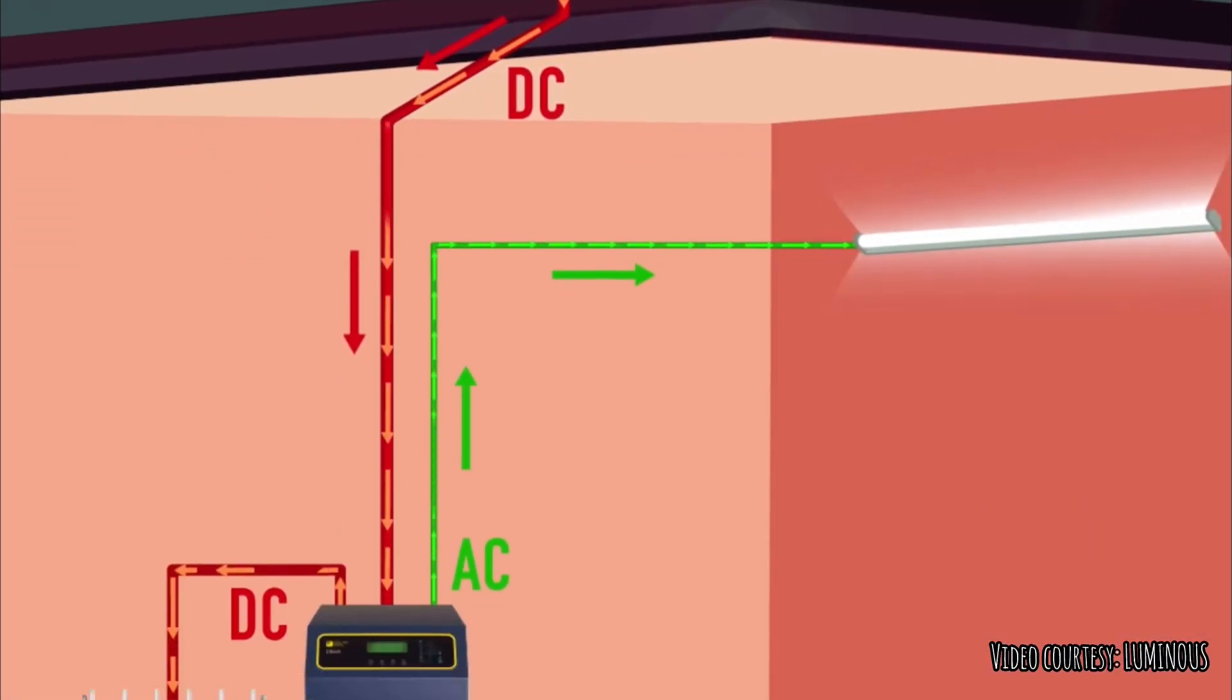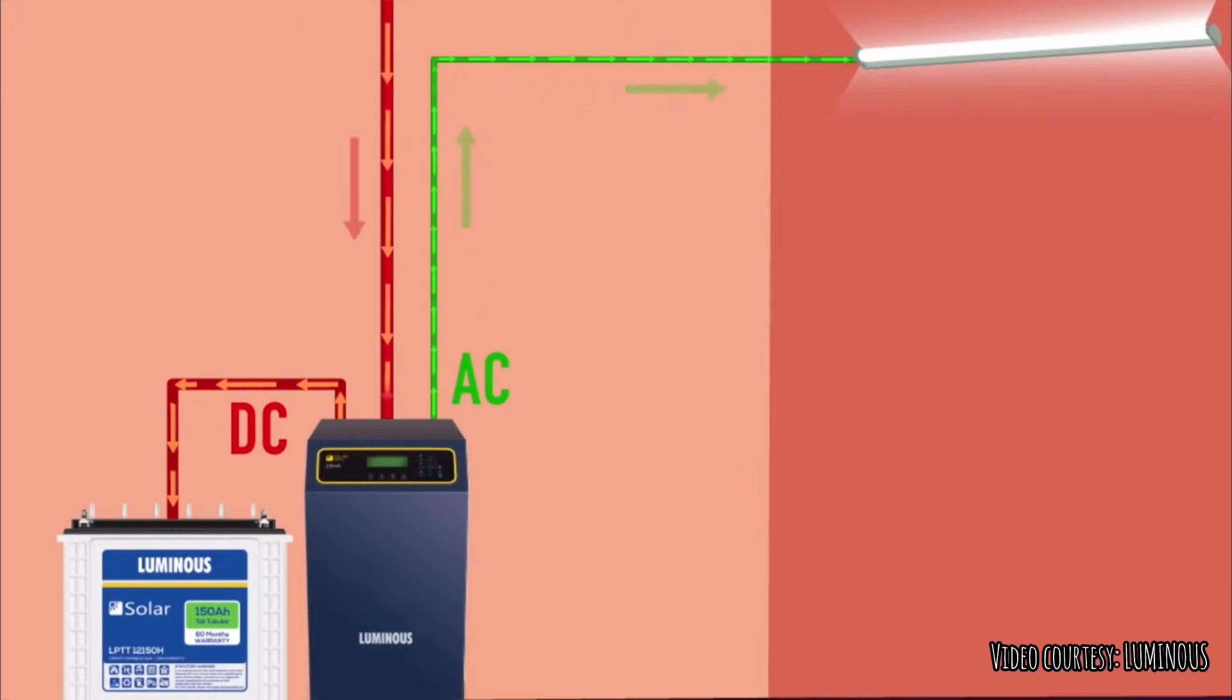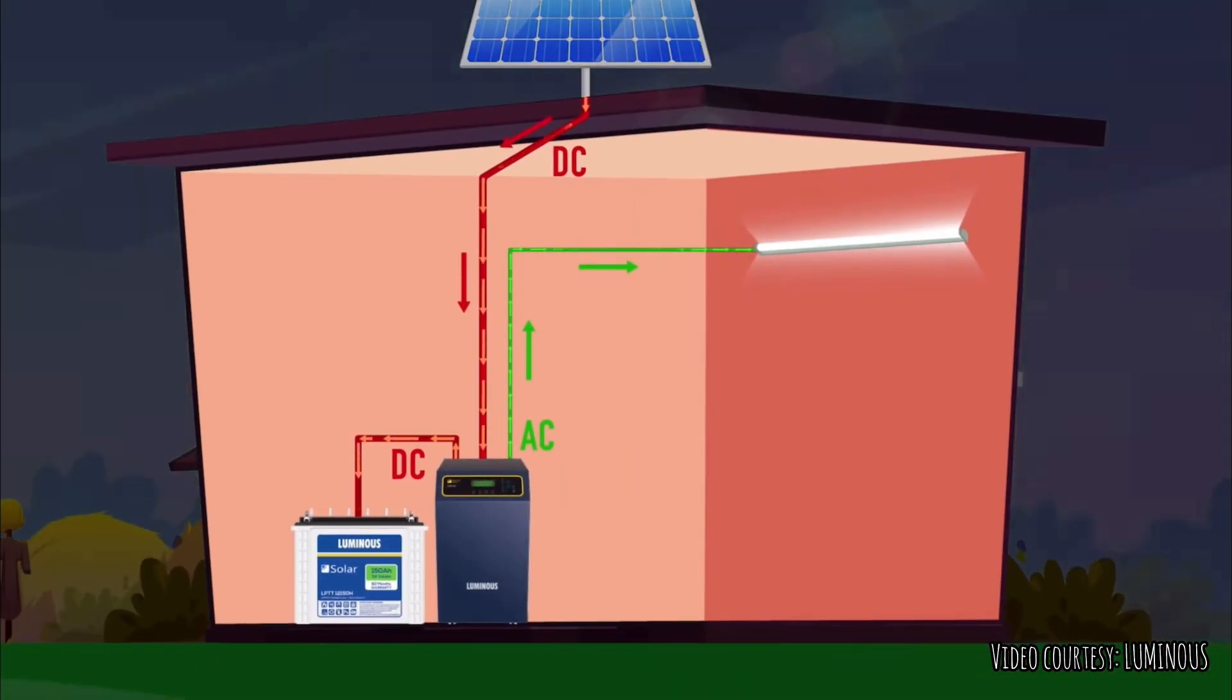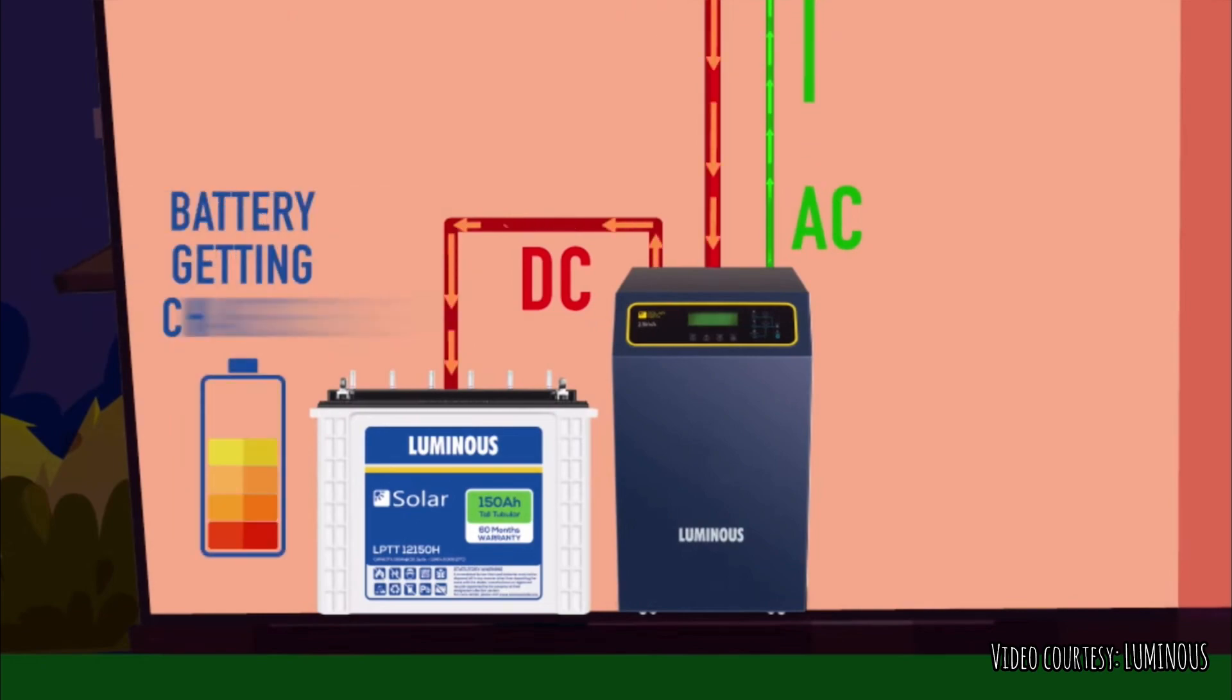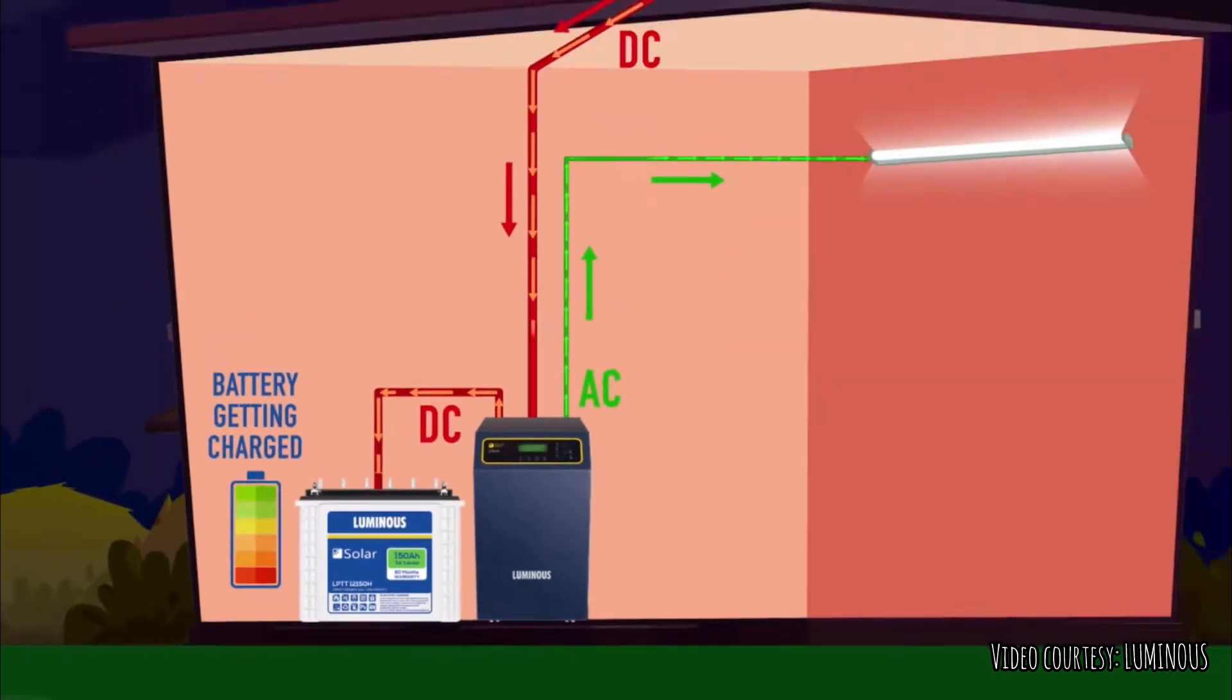The solar panels generate DC power and the inverter converts it into AC power to run the electrical requirements. When the load of the house or business is less than the power generated, that power gets stored in the battery.